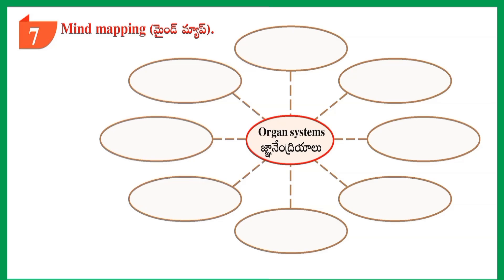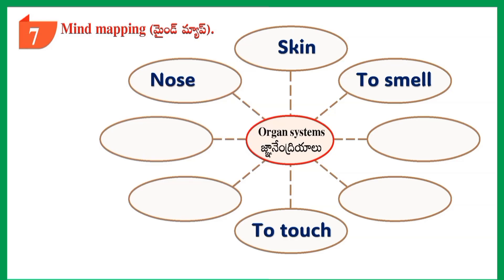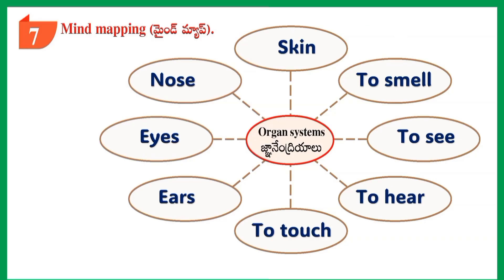Section 7: Mind Mapping — Organ Systems. Skin: to touch. Nose: to smell. Eyes: to see. Ears: to hear.